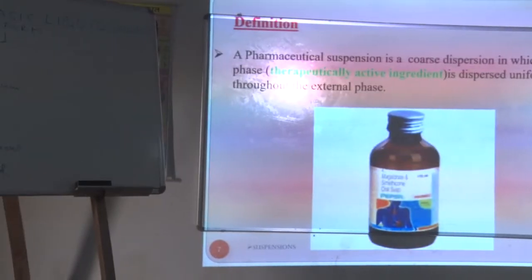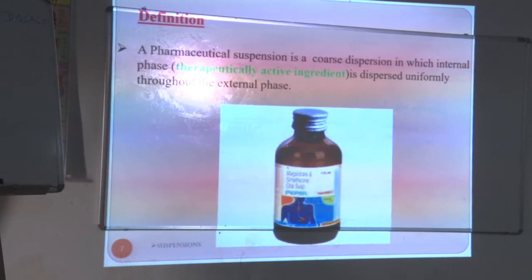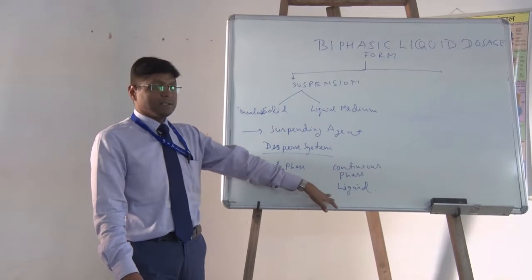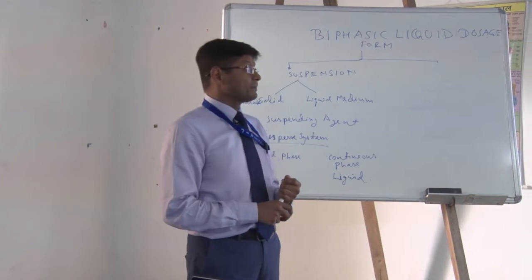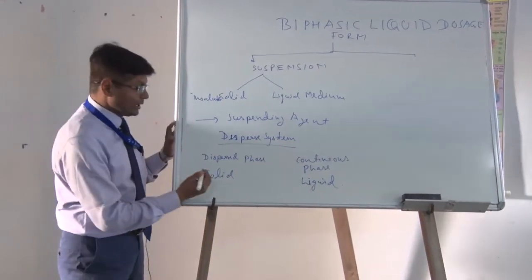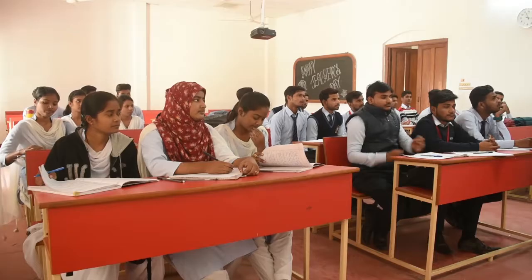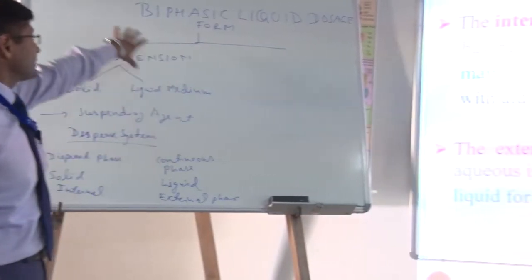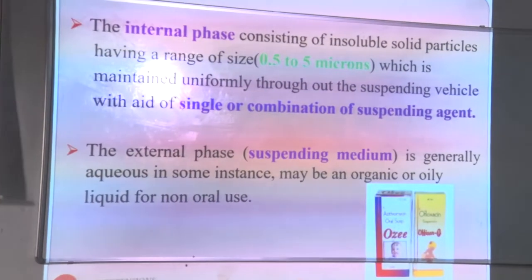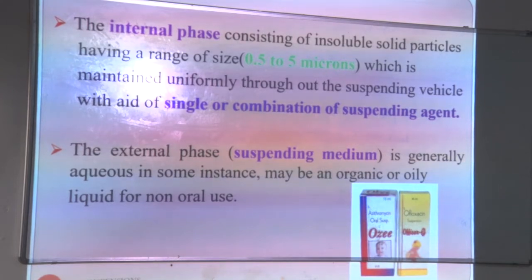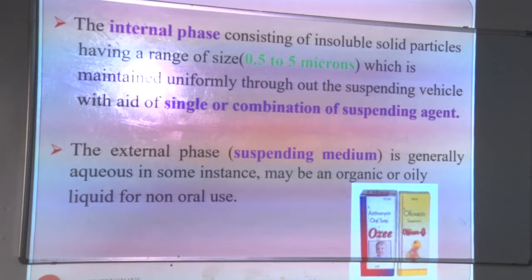Pharmaceutical suspension is a coarse dispersion in which the internal phase is dispersed uniformly throughout the external phase. You can define it in many ways — as a disperse system with disperse phase and continuous phase. The main thing in suspension is the particle size: insoluble solid particles have a particle size range of 0.5 to 5 microns, maintained uniformly with the help of suspending vehicles or suspending agent. The external phase is generally aqueous but may be organic or oily for non-oral preparations.